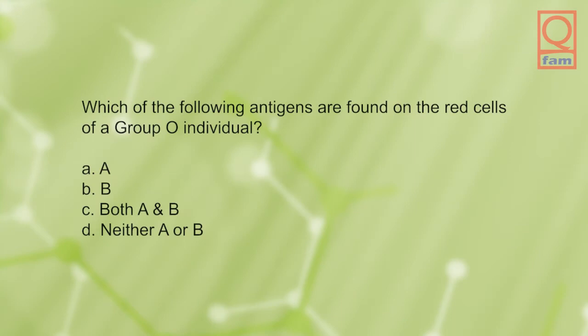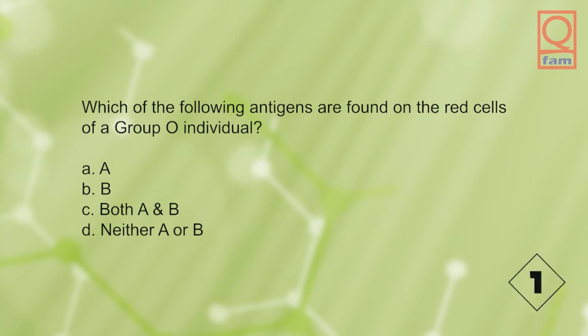Which of the following antigens are found on the red cells of a group O individual? A) A, B) B, C) both A and B, D) neither A nor B. The answer is D, neither A nor B.